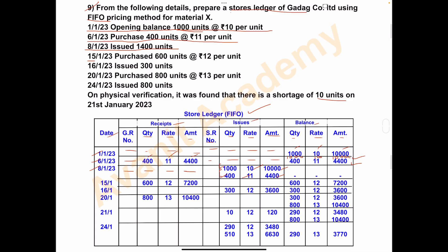Next, on 15th January 2023, purchased 600 units at Rs. 12 per unit. Write in receipts: GR number nil, quantity 600, rate per unit 12, total amount 600 into 12 = Rs. 7,200. Issues column nil. There is no previous balance, so write the recent purchase: 600 units at Rs. 12, total amount Rs. 7,200.